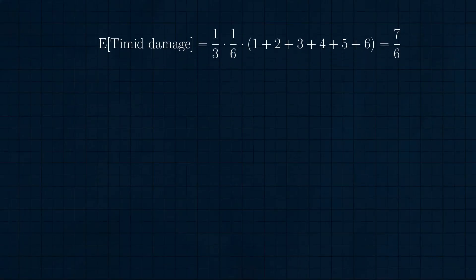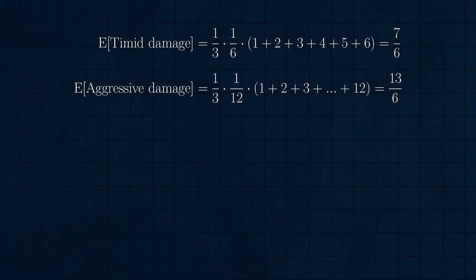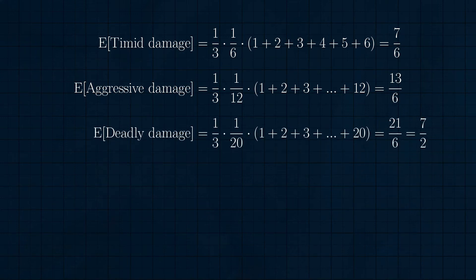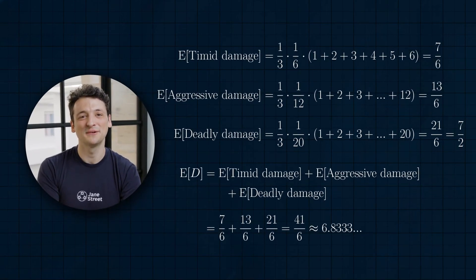There's a much more natural and less error-prone way to compute this expectation using linearity. Let's break up the damage done by our monster by difficulty class: damage equals timid damage plus aggressive damage plus deadly damage, where for any particular monster, only one of these three will be non-zero. The expected value of timid damage is the 1/3 chance we are facing a timid monster times the sum of 1/6 times the numbers 1 through 6, so 1/3 times 7/2, or 7/6. Similarly, the expected value of aggressive damage is 1/3 times 13/2, or 13/6. And the EV of the deadly damage is 7/2. So by linearity of expectation, the expected value of the damage is 7/6 plus 13/6 plus 7/2, or 41/6, or 6.8333. Good to see the result was the same with this clearer way to group the arithmetic.